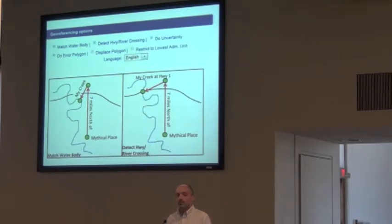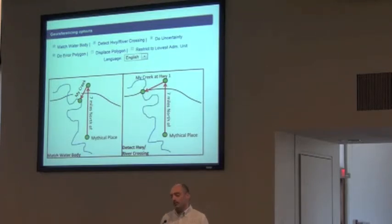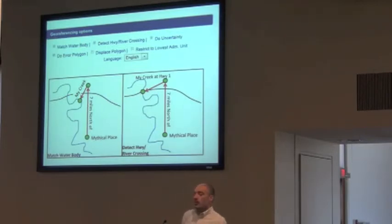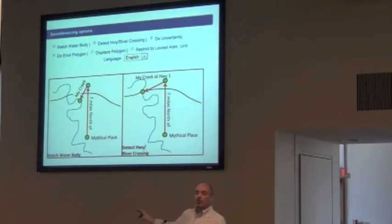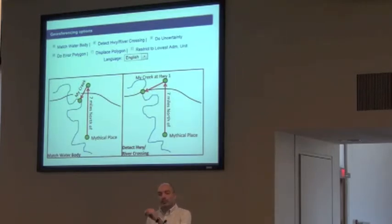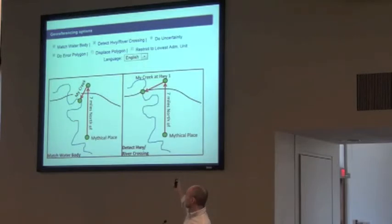There are a number of different options available in georeferencing — some you might want to turn off if you know you have a lot of localities that may not be located near a water body. One feature is the match water body feature, where we have linear networks for all water bodies in the United States and some selected countries. So if a locality references a particular river or stream, after the georeferencing process we can identify where that stream is and snap the point to the nearest point on that stream. If I'm seven miles from some place, I can find the closest point on that stream and snap it there, as well as identify bridge crossings.